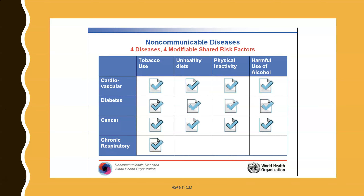There are four main risk factors that drive these four diseases, and they are shared across cardiovascular disease, diabetes, cancer, and chronic respiratory diseases. They share causes, so they also share opportunities for prevention and mitigation against these four non-communicable diseases. If we were to address tobacco consumption, unhealthy diets, insufficient exercise, and alcohol misuse, it would go a long way in mitigating all four diseases — a big bang for each public health buck.